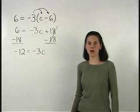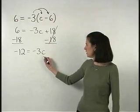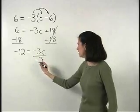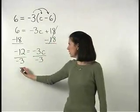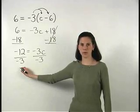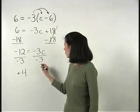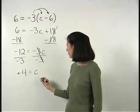So we have negative 12 equals negative 3c. And to get c by itself, we divide both sides by negative 3. On the left side, negative 12 divided by negative 3 is positive 4. And on the right, the negative 3's cancel and we're left with c.